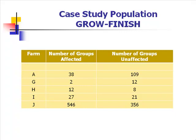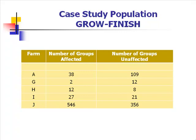In grow-finish, we had five different farms. Groups affected ranged from 2 to 546, with unaffected groups ranging from 12 to 356. What we had is the operation had buildings they were able to identify — these broke, these did not — so we had the same management, the same rations, the same genetics, with some groups breaking and others not.